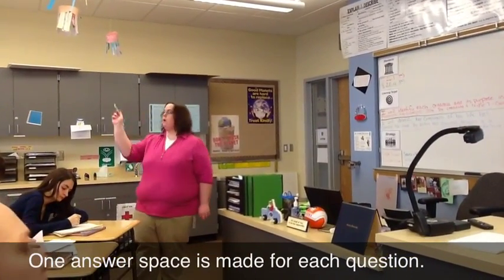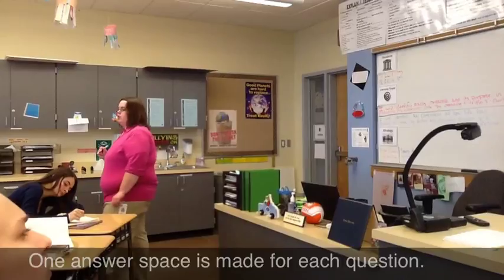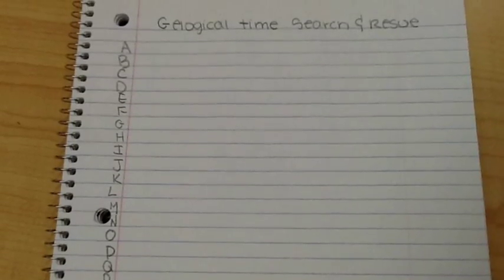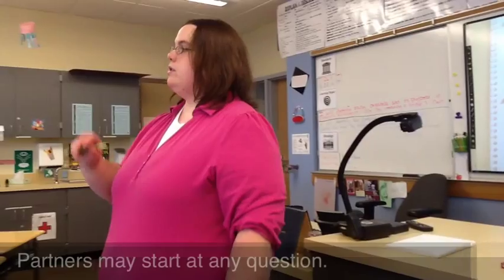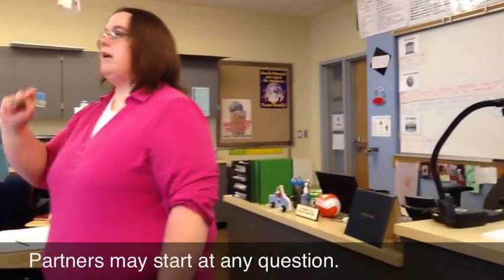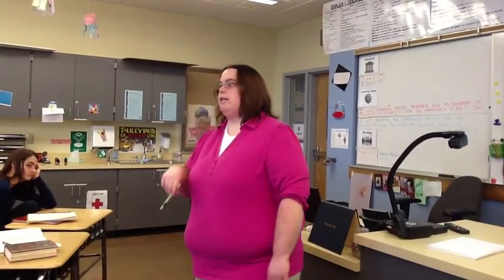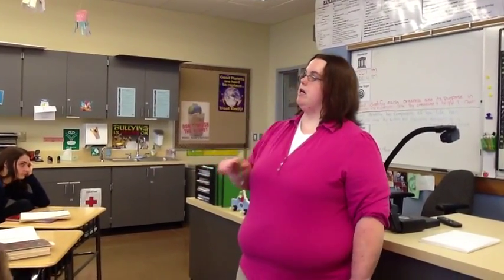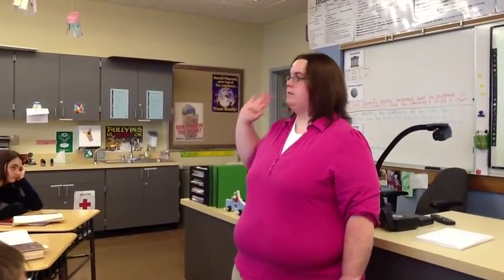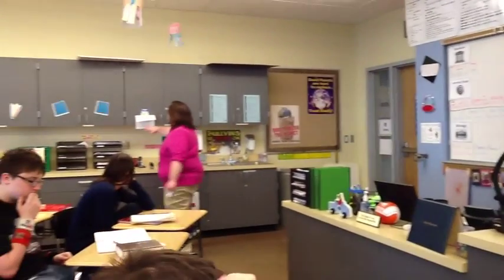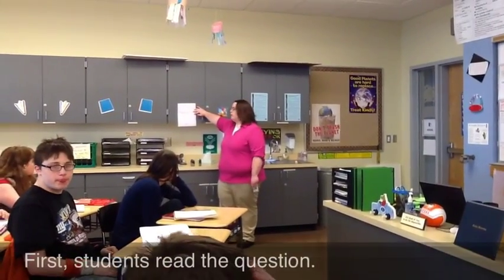We have questions A through R all throughout the room, and I'll show you those in just a second. The way a search and rescue works is we have different questions all throughout the room. You and your partner are going to start at any of the letters — it doesn't matter if you start at A, K, or P. You're going to start at one of the letters, and underneath the flap there's a question there.